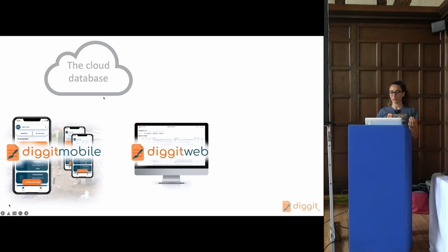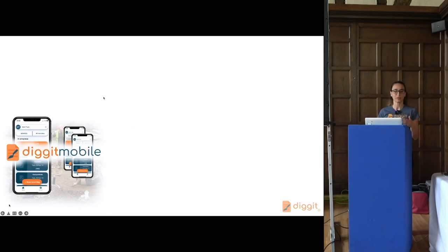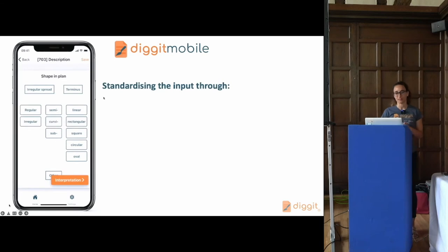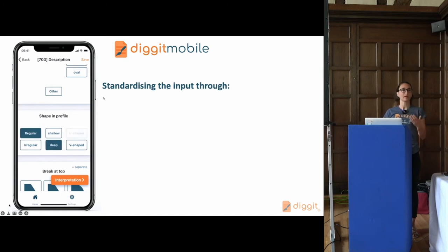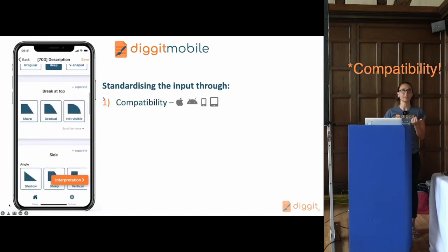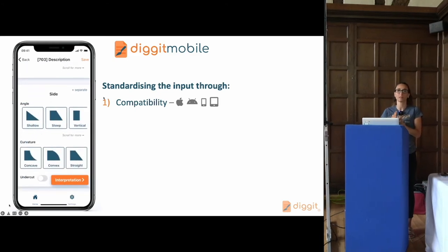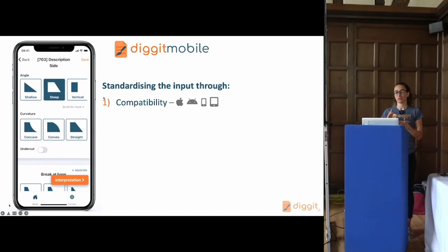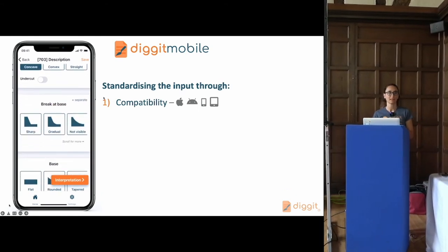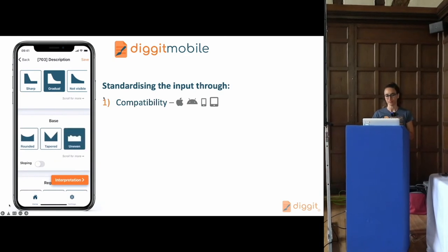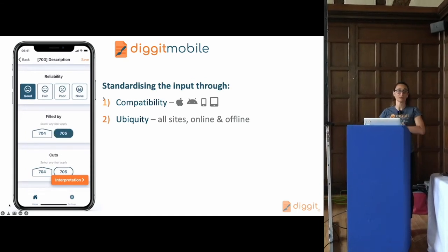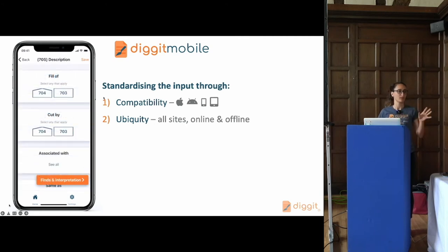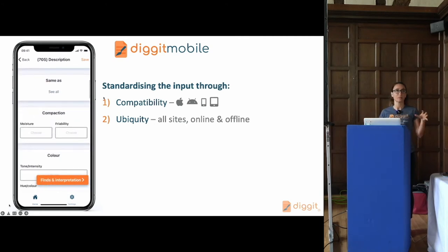Let's look at how the system introduces data standardization, starting with Digit Mobile — our solution to standardizing the input. We achieve that through five key principles. The first is connectivity, because you can't achieve standardization if you're exclusive to one particular platform or device. So Digit works on all Android or iOS devices, whether smartphones or tablets. The next principle is ubiquity. For achieving standardization, you need to be able to use it on all your sites — small sites, big sites, trenching sites, open area ones, and also the completely remote and offline ones versus those with connectivity. So Digit works everywhere.